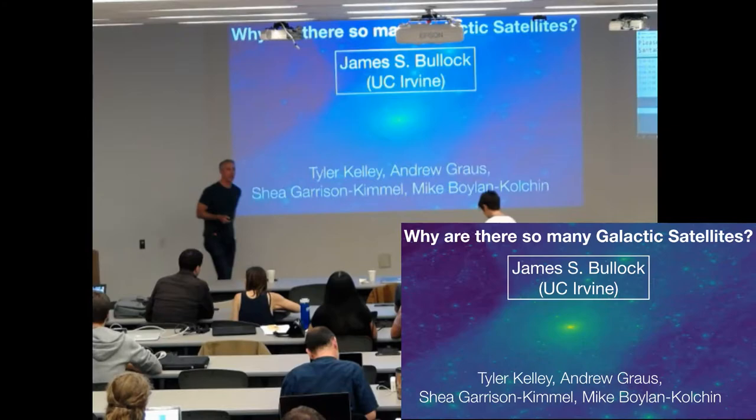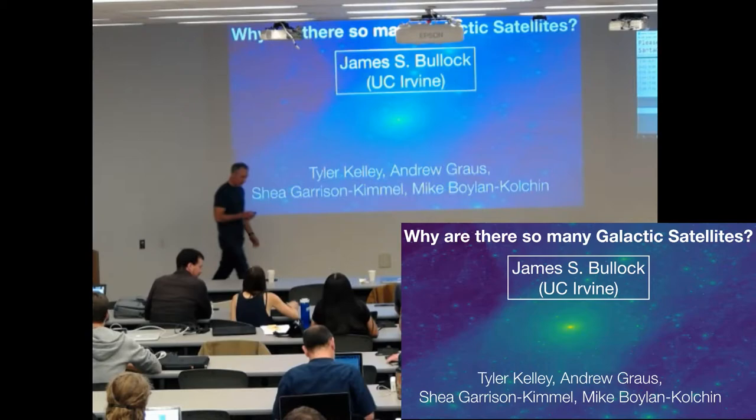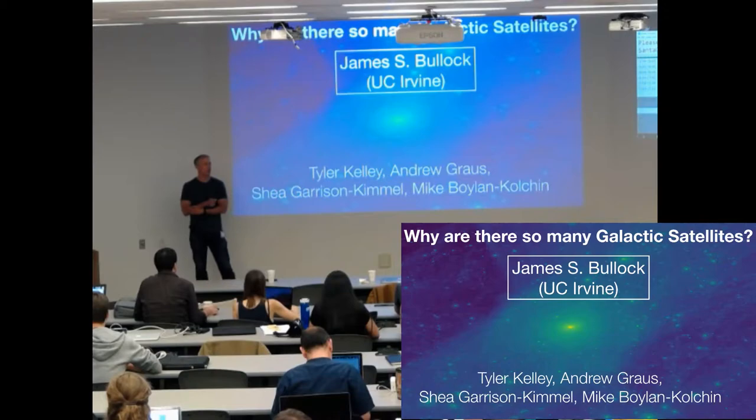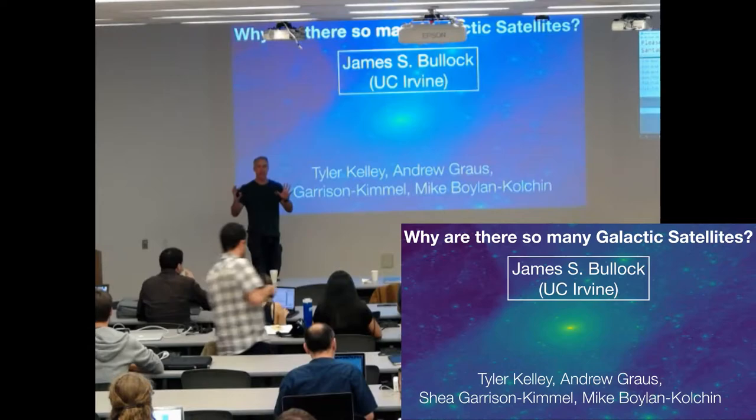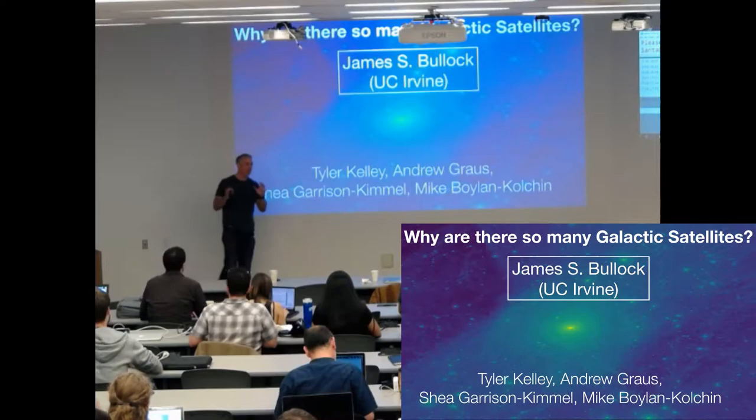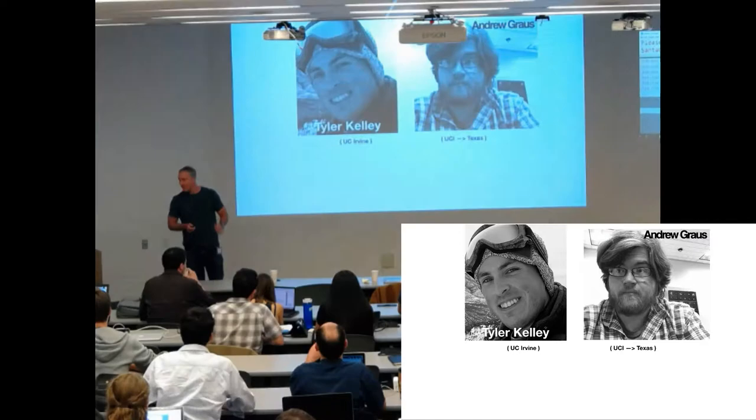And James Bullock is kicking us off. Okay, thanks very much. Always a pleasure to be here at this fantastic meeting. So today I want to talk about understanding why we have so many galactic satellites. This is sort of the opposite of the missing satellites problem in the sense that I think we've got plenty of galaxies now, don't find any more. If you go out and you find too many more, it's going to start maybe going the other way. So that's kind of what this is about.